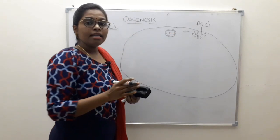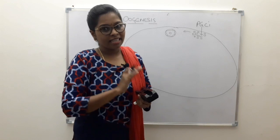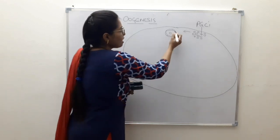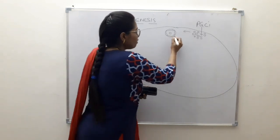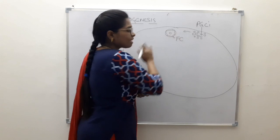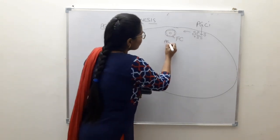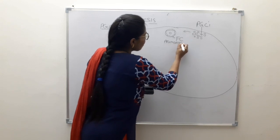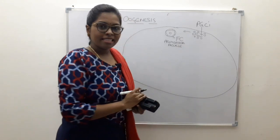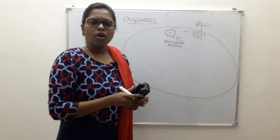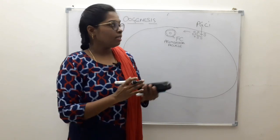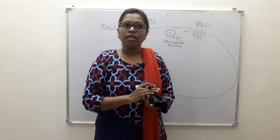At the end of the third month of intrauterine life, the oogonia which divided by mitotic division are surrounded by flattened epithelial cells called follicular cells. This oogonium along with the follicular cells is known as the primordial follicle. The oogonia repeatedly divide mitotically, and by the seventh month the population of oogonia will be around 2 to 5 million.